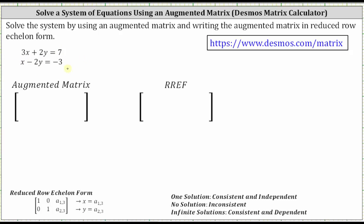In this case, both equations are in standard form and therefore we can write the augmented matrix. Each equation gives us one row in the augmented matrix.